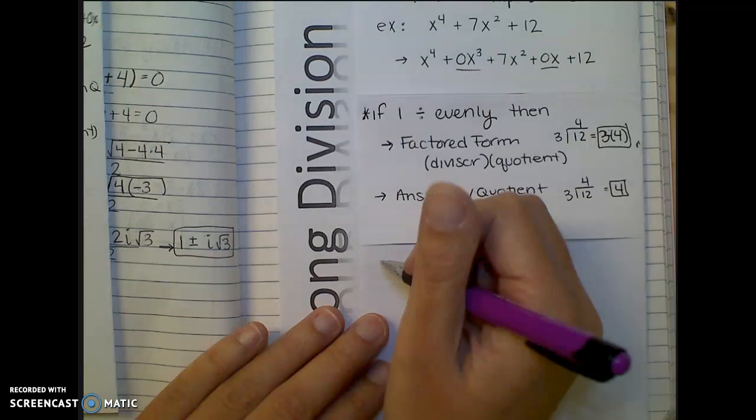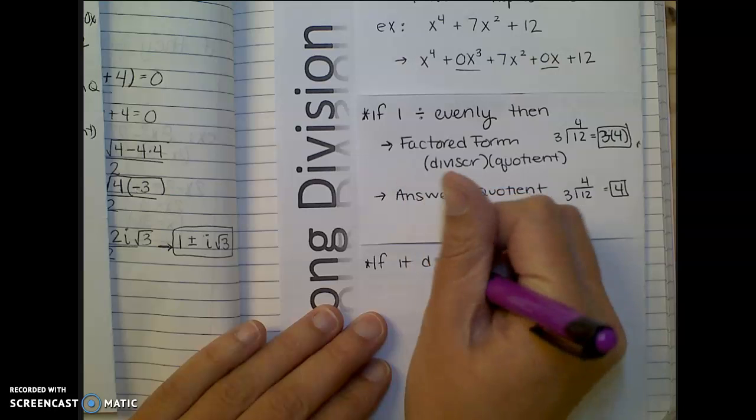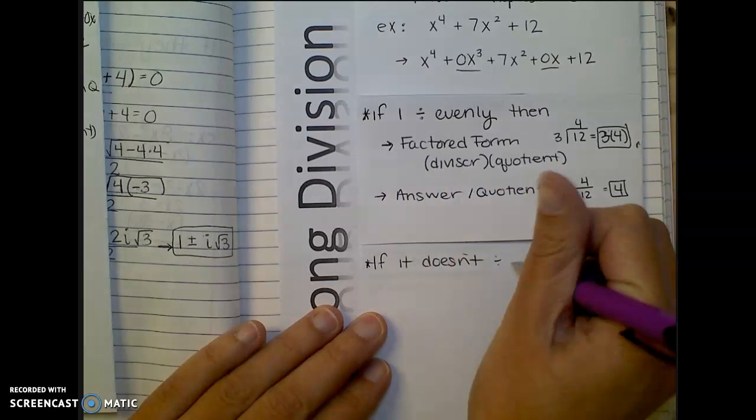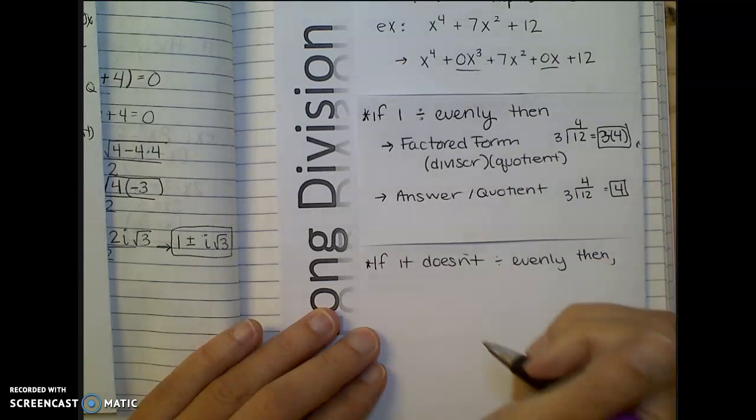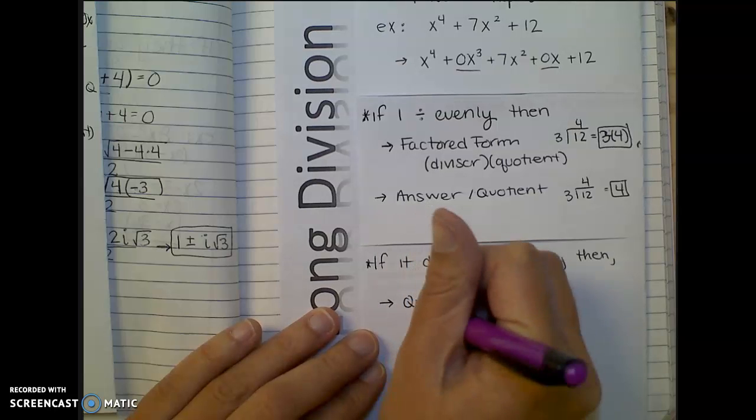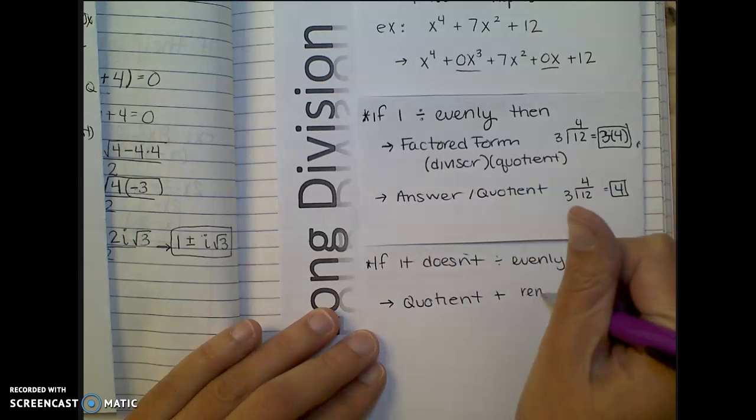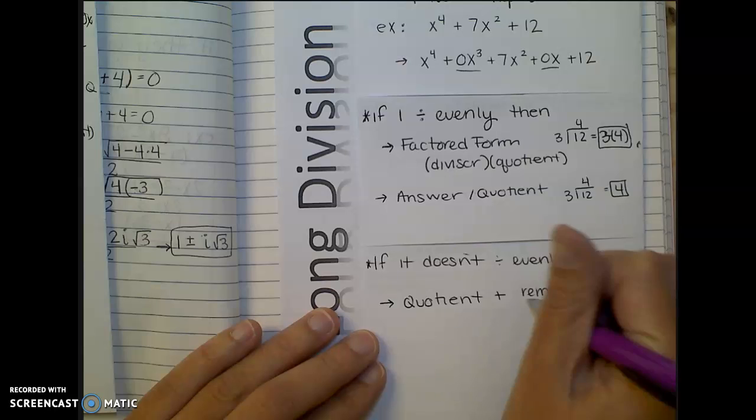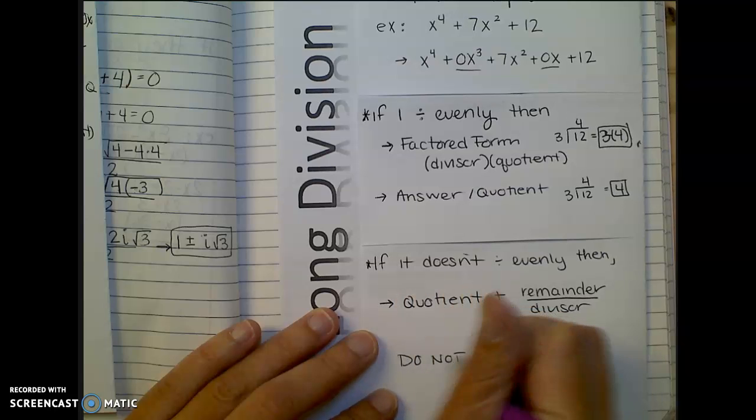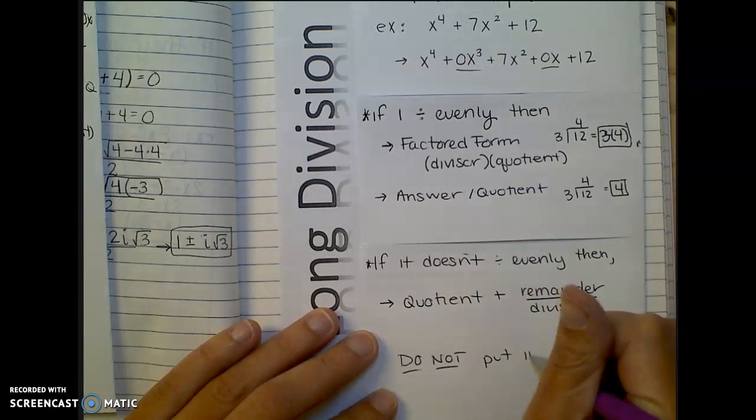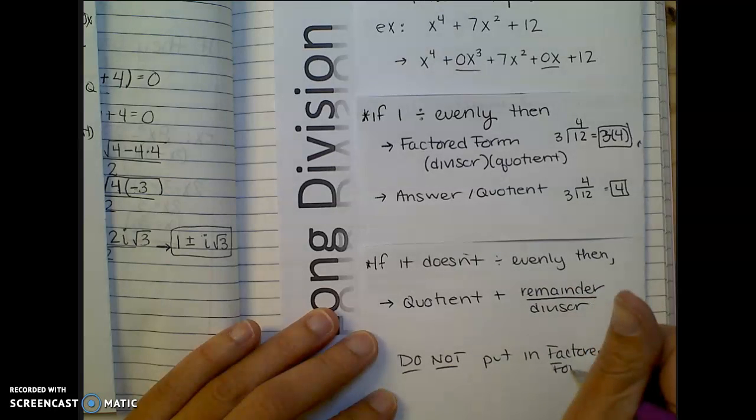And then the last thing I wanted to make a note of here. If it doesn't divide evenly, then I probably don't want to put it in factored form. So you just want to write your quotient plus the remainder that you got over your divisor. So do not put in factored form. It doesn't really make sense to because it didn't really factor out.